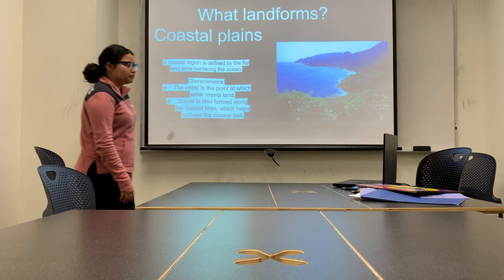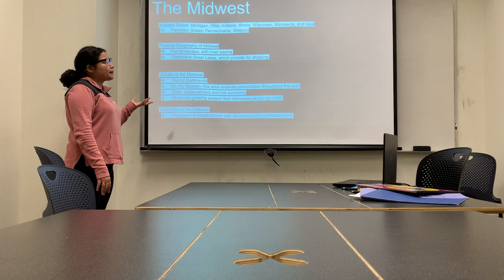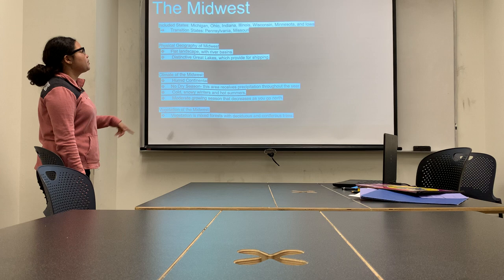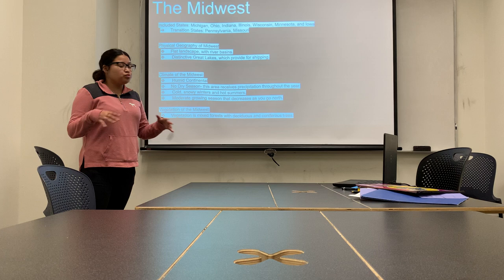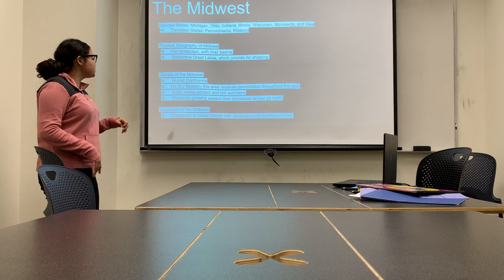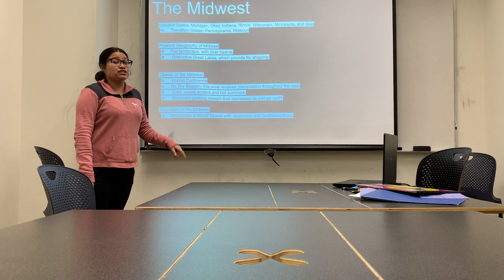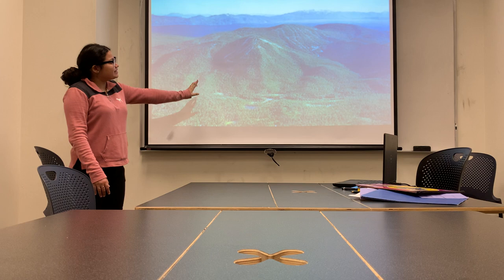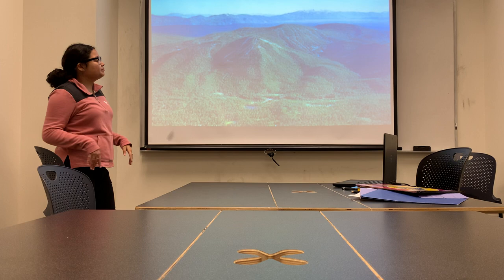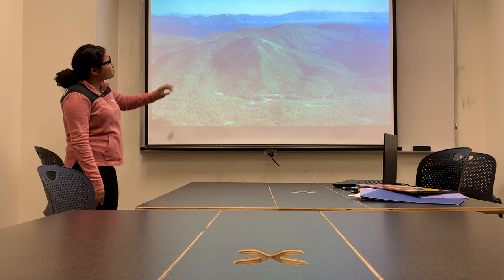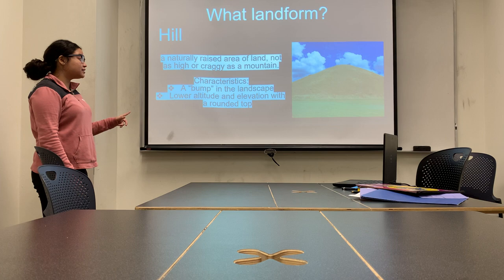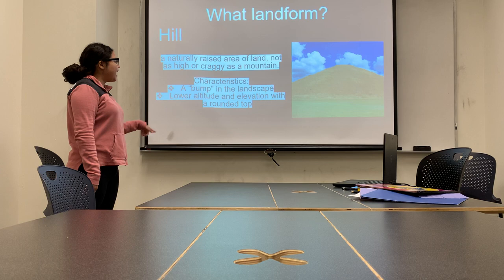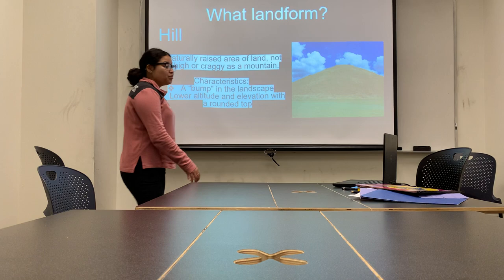Next we have the Midwest region, which includes things like Michigan and Ohio. The physical geography is flat land with river basins, and we have the distinctive Great Lakes. The climate is humid with no dry season — similar to the Northeast region — with cold, snowy winters but hot summers. The vegetation is mixed forest, and the growing season decreases as you go north. In the Midwest we see hills, not mountains — a hill has a round top, while a mountain has a peak. A hill is a natural raised area of land, not as high as a mountain — kind of like a bump in the landscape with lower altitude and a round top.